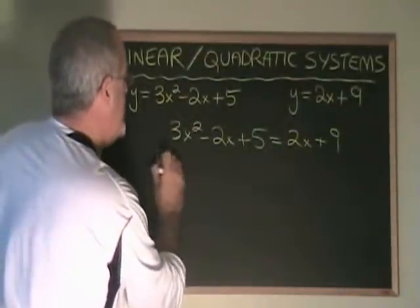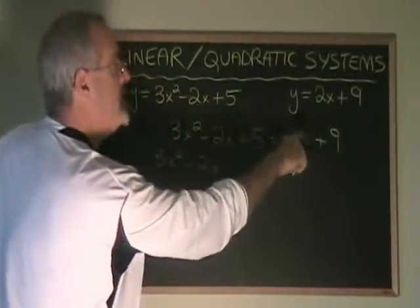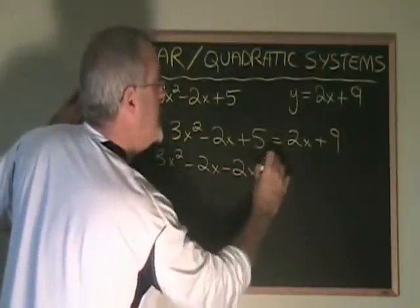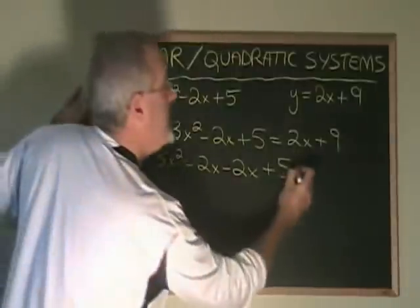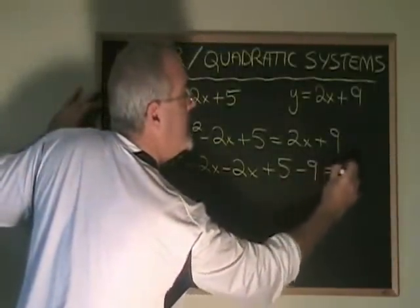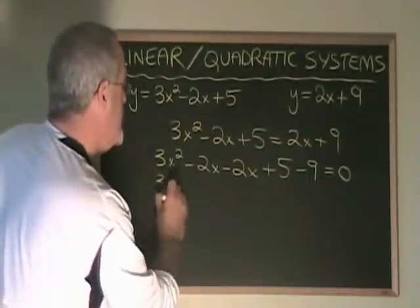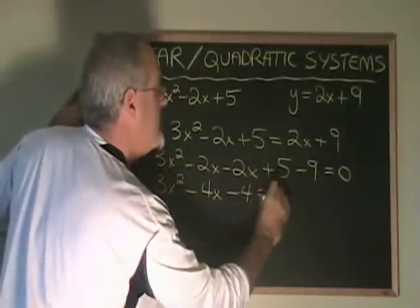Simplifying this, I get 3x squared minus 2x. If I move this 2x to the other side, I have another minus 2x plus 5 and if I move the 9 to the other side, minus 9 equals 0. Simplifying this, 3x squared minus 4x minus 4 equals 0.